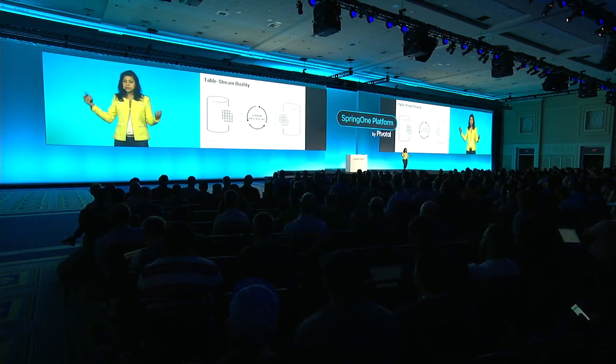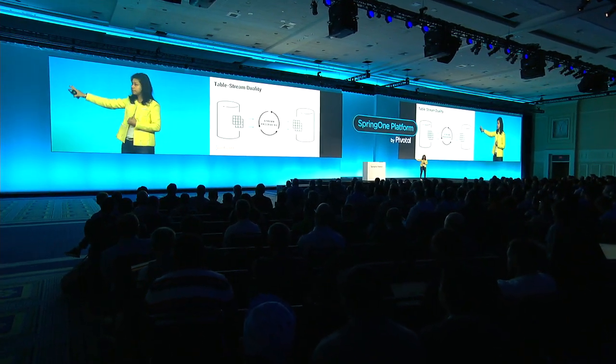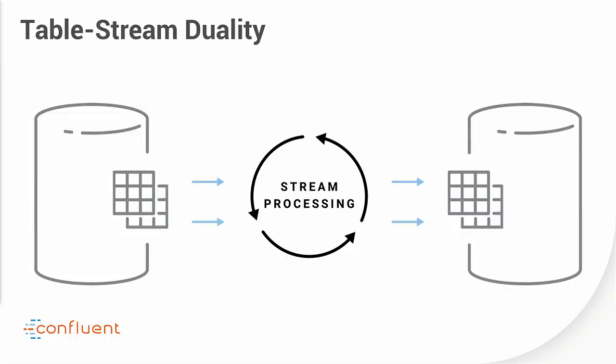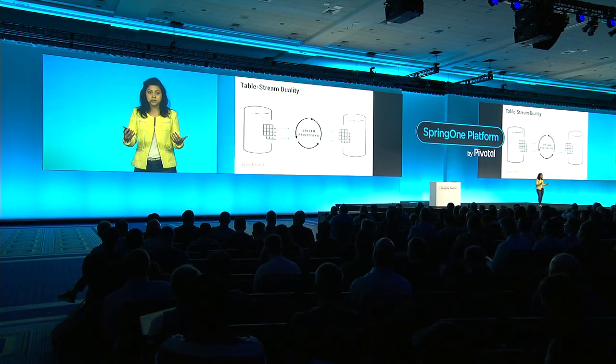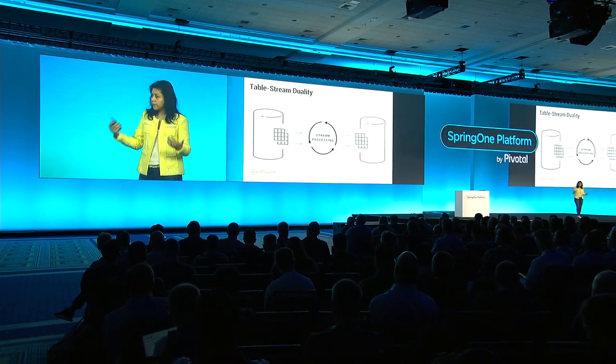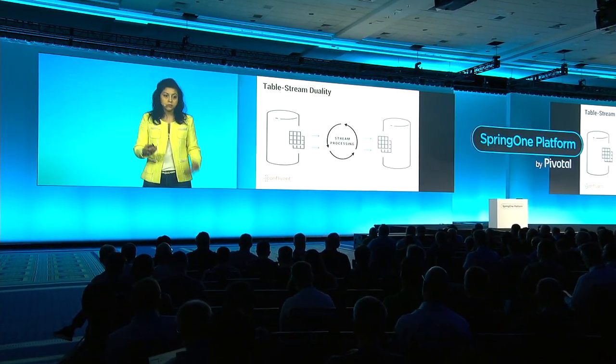Kafka allows you to do stream processing on a source-of-truth event log. You can replace the left side of the picture — the database — with your application. You can replace the right side with pretty much anything else: an Elasticsearch index, a Cassandra store, or just your application cache. That's how generalizable this idea is of event-driven microservices on top of Apache Kafka.